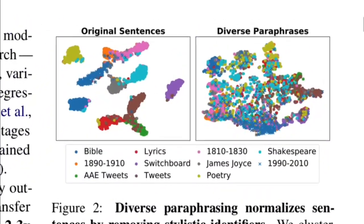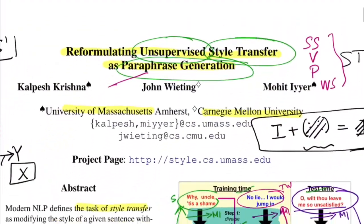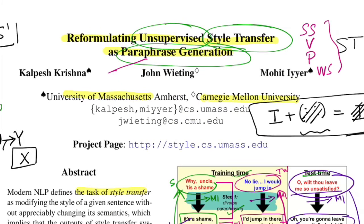One more diagram shows that on the left, original sentences from different styles form distinct clusters. After the paraphrase model is applied, everything disperses in that space — confirming that sentences from different styles have been normalized, so no clusters remain. Overall, this is really good work; the paper was written beautifully and extensively, with all the details. If you liked the walkthrough, hit the like button, subscribe, and spread the word. See you in the next one!